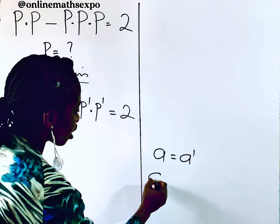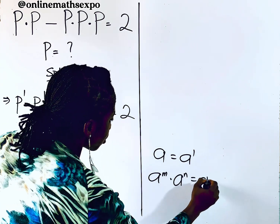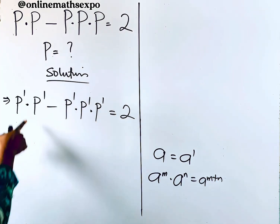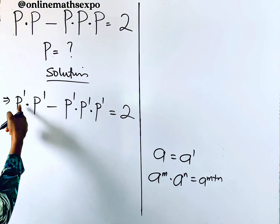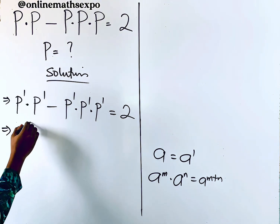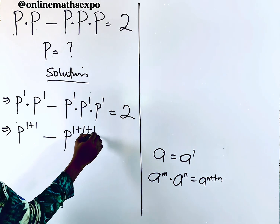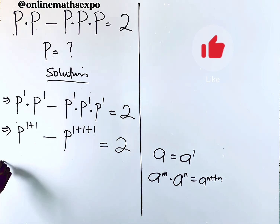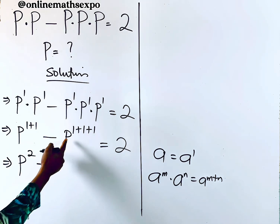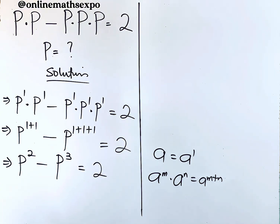Remember, for a^m multiplied by a^n, it is a to the power of m plus n — you add the powers when they are multiplying. So since these are multiplying, we add the powers: p to the power of one plus one gives p², and p to the power of one plus one plus one gives p³, and everything is equal to two.